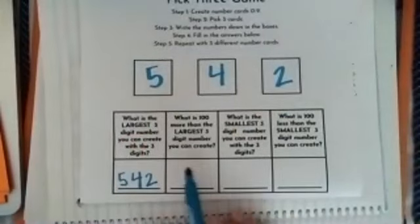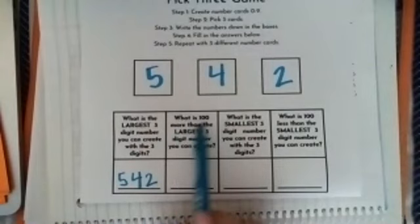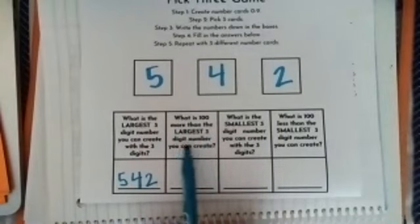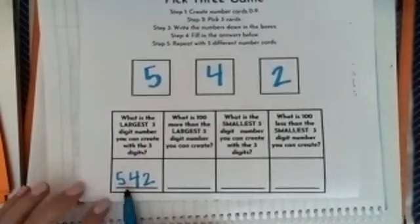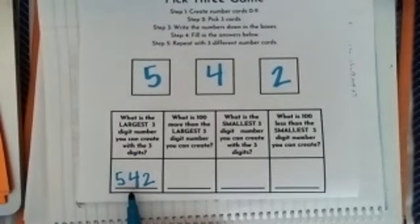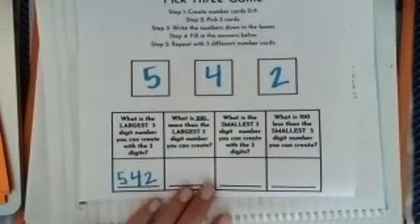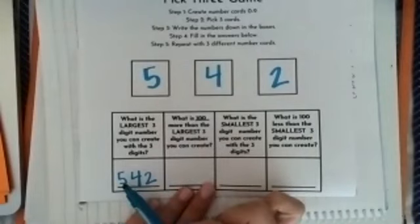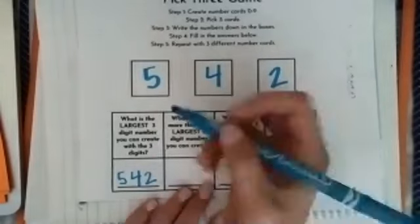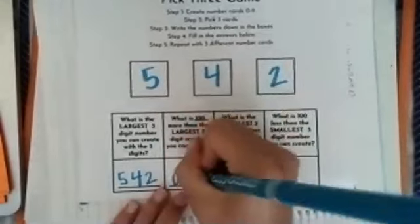Now I've done the first question. So now I move on to my second question. The second question says, what is 100 more than the largest three-digit number? So I created the largest three-digit number over here, 542. Now I have to think, what is 100 more than 542? Well, I know 100 more than 542 is 642.